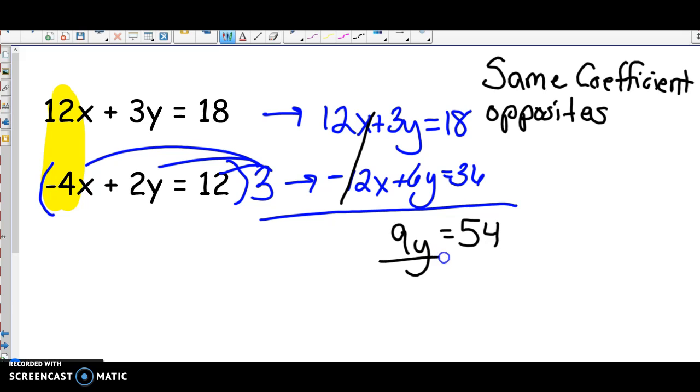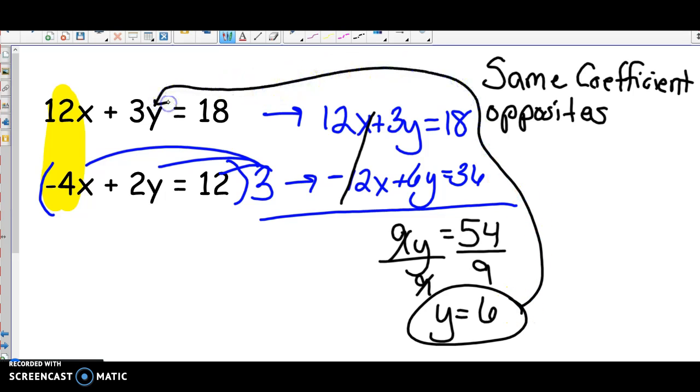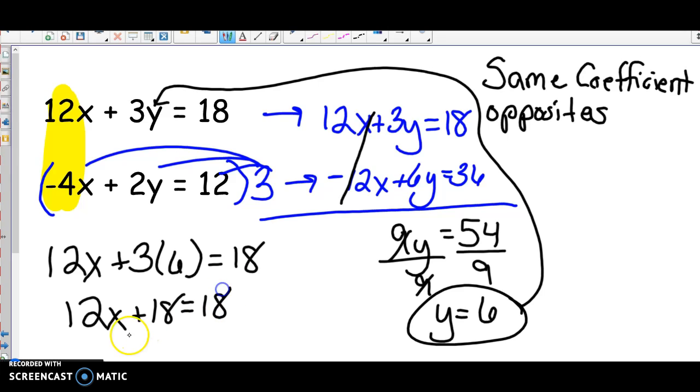Now divide both sides by 9, and you get y equals 6. Now that I know that y equals 6, I can go back and plug it in for y. I get 12x plus 3 times 6 equals 18. 12x plus 18 equals 18. Subtract 18 from both sides, you get 12x equals 0. Therefore, x must equal 0.